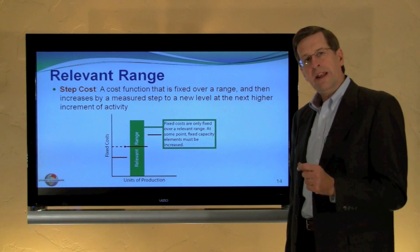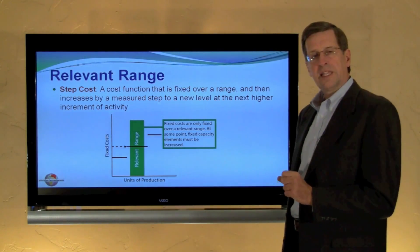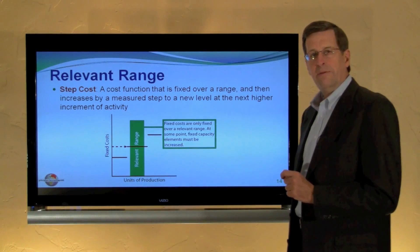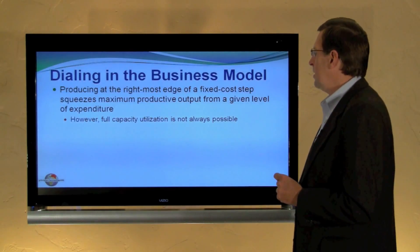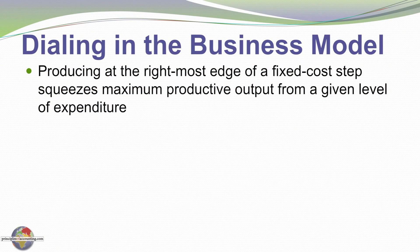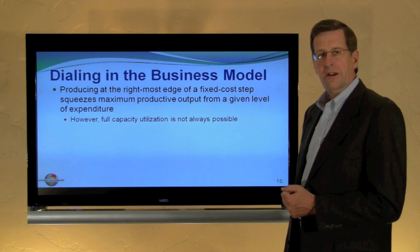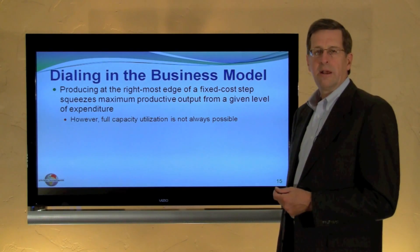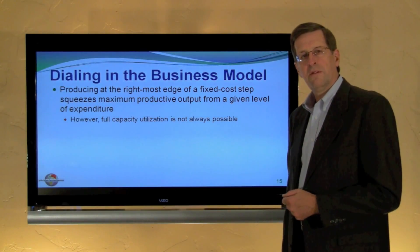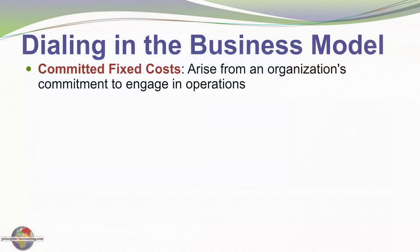In evaluating fixed costs for a business, we have to think about the fixed costs applicable over the range of activity in which we expect to operate. When we consider the relevant range and step costs, it makes sense that we would want to operate at the right-most edge of a step cost, because that's where we have full capacity utilization — fully utilizing a fixed cost without having to step up to a higher level. Of course, in some cases full capacity utilization is simply not possible, and there may be some idle capacity for which we'll have to incur the fixed cost for a period of time.